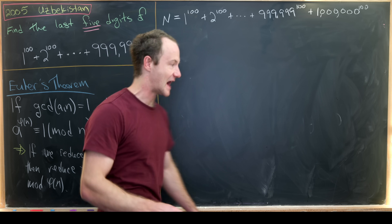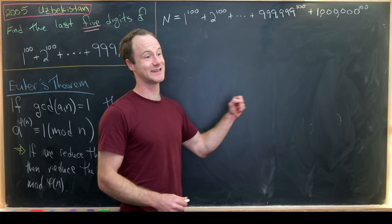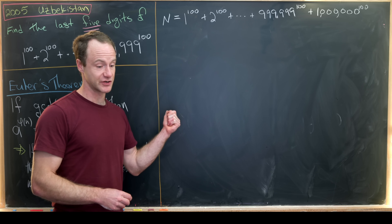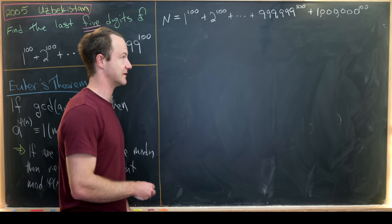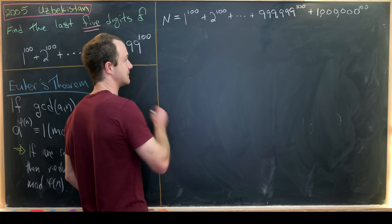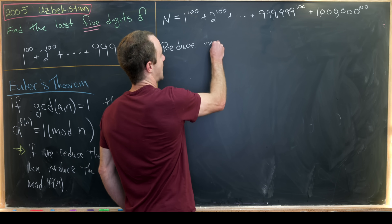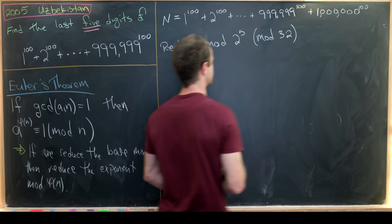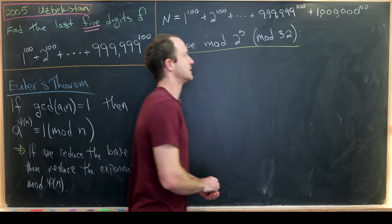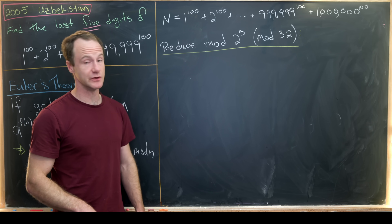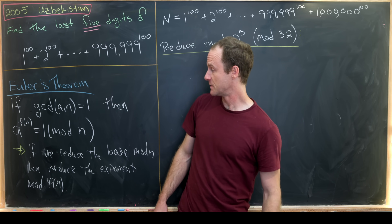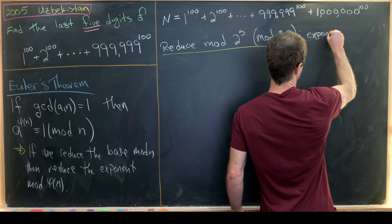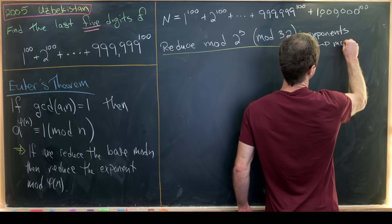To look at the last five digits, we need to reduce mod 10^5. It's much easier to reduce mod powers of primes, so we factor 10^5 = 2^5 × 5^5 and reduce each separately. The first thing we'll do is reduce modulo 2^5, which is 32. When we reduce our base mod 32, we reduce our exponent mod φ(32). φ(32) = 16, so we'll be reducing exponents mod 16.